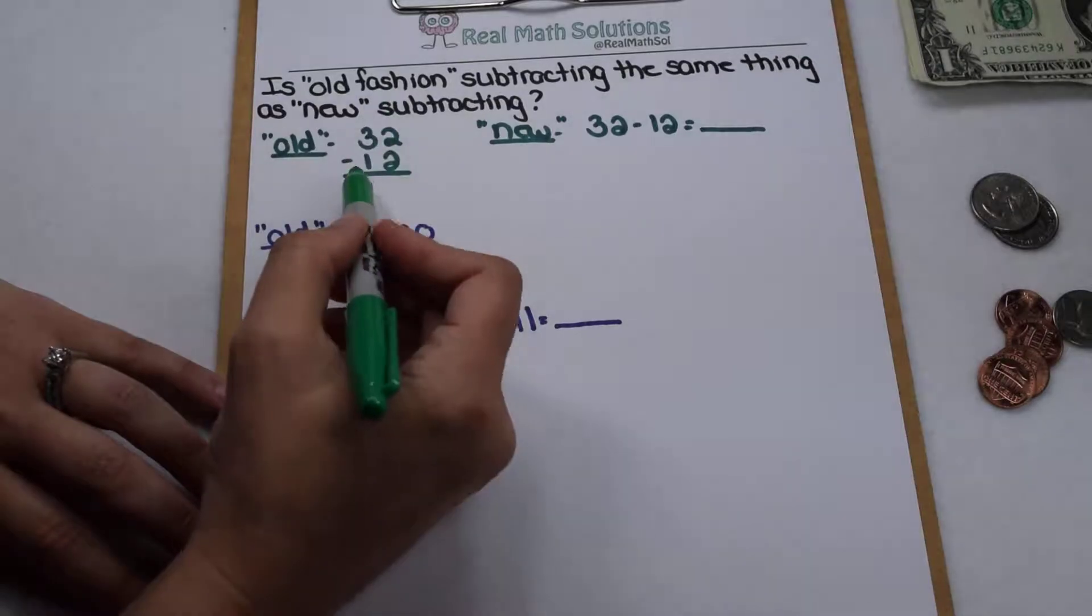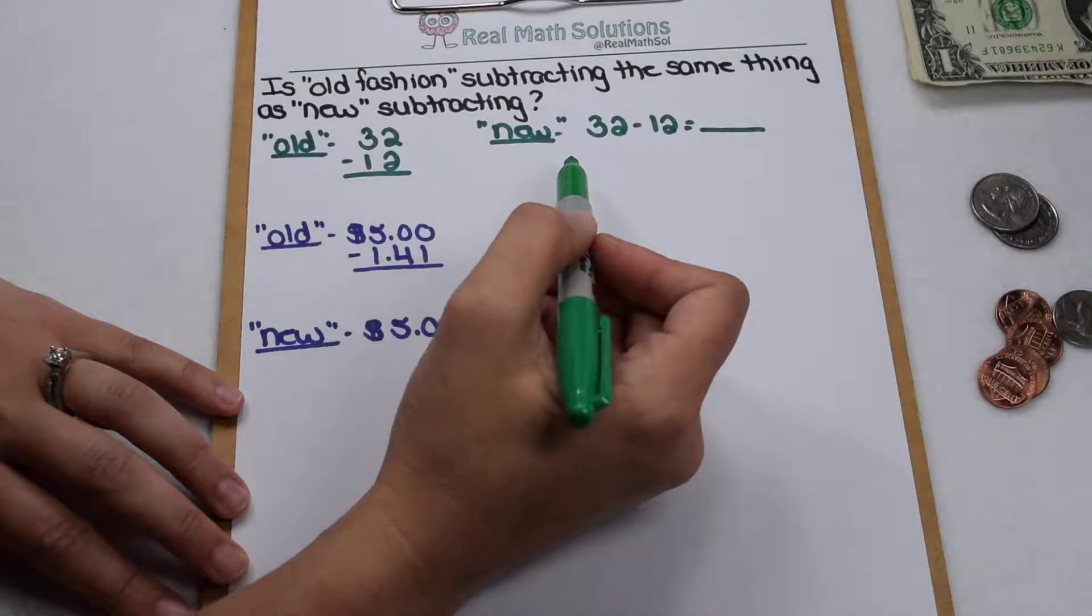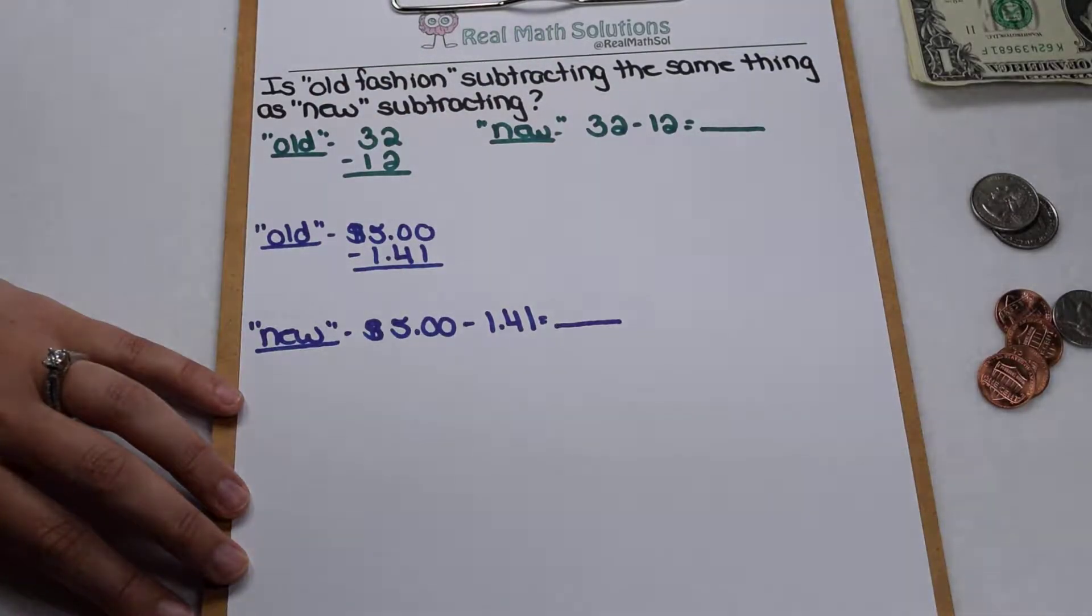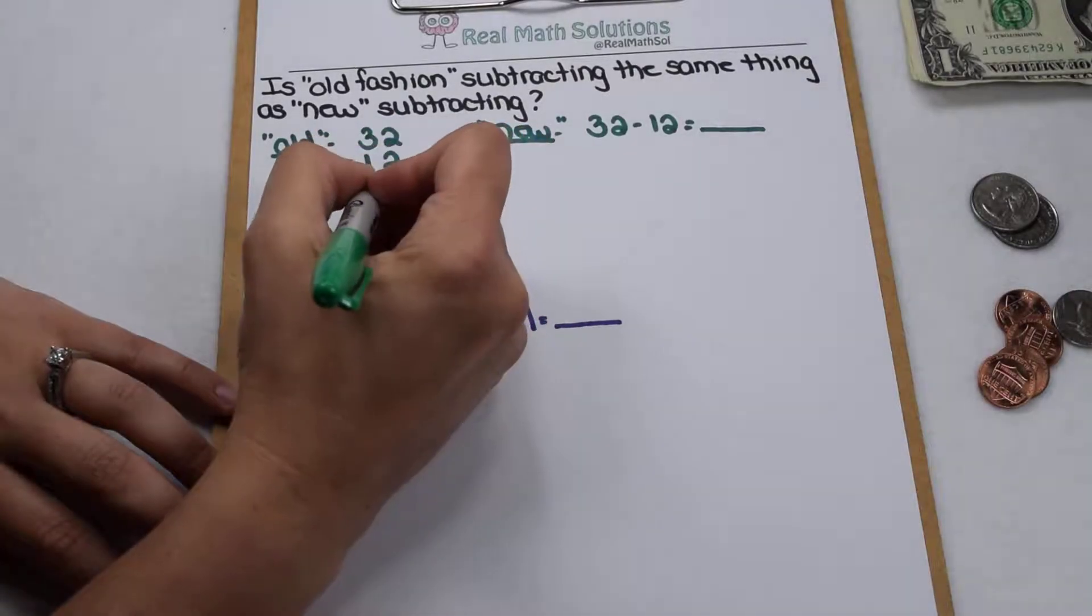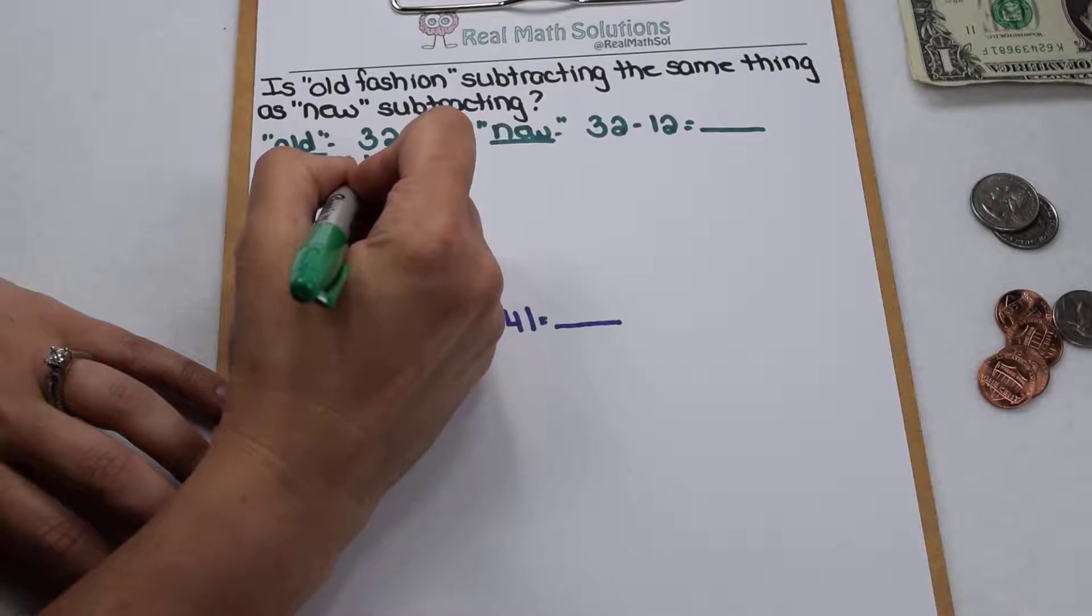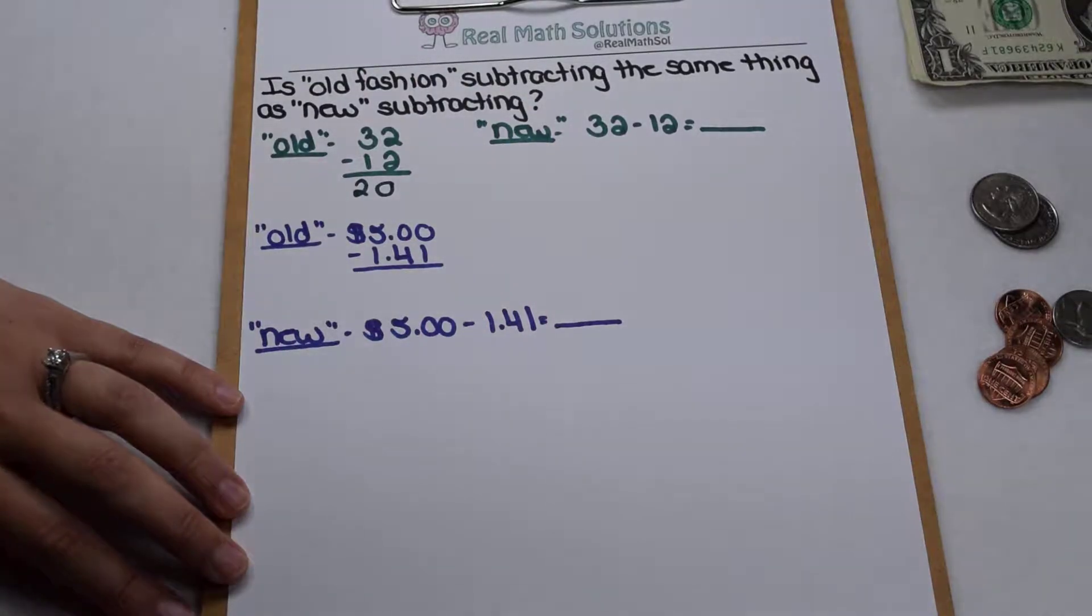Let's take a look more closely at the old way that we learned and the new way that most of our kids are learning and see if we can find any similarities between them. In the old way, we would just subtract 2 minus 2 is 0 and 3 minus 1 is 2 and come out with a difference of 20.